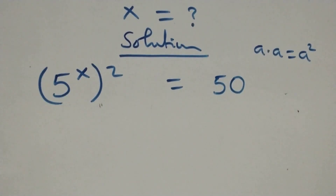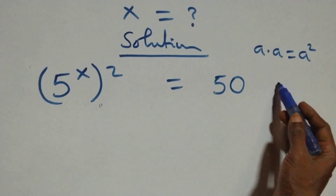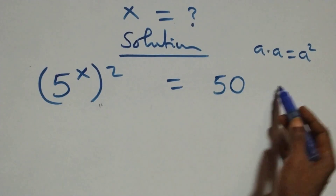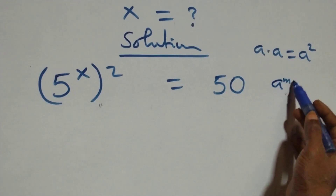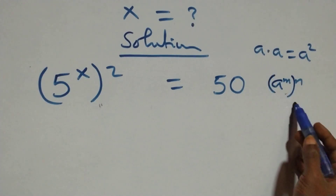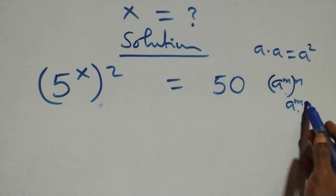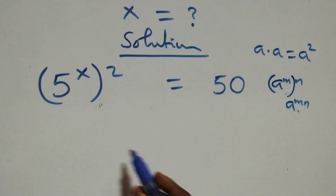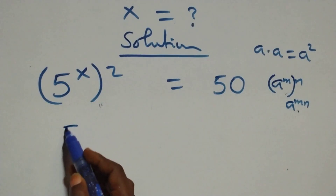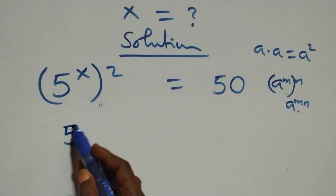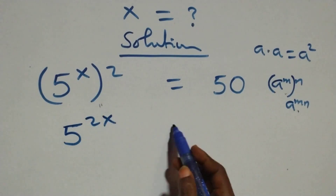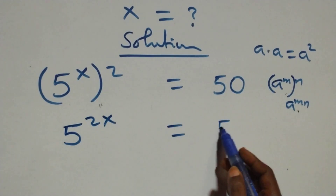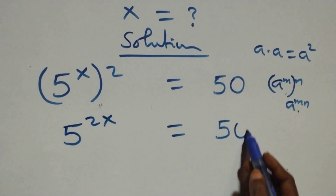This follows the law of indices: a raised to power m, raised to power n, is the same thing as a raised to power m times n. So the power multiplies and we have five raised to power two x equals fifty on this side.